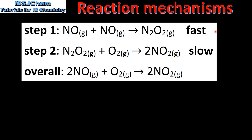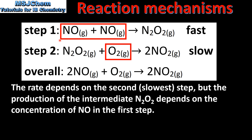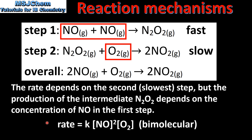Let's look at one more example. In the previous examples step 1 was the slowest step — the rate determining step. However, in this reaction mechanism step 2 is the slowest step. So the rate depends on the second step, but the production of the intermediate N2O2 depends on the concentration of NO in the first step. So when we write the rate expression we have to include the NO from the first step and the oxygen from the second step. Here we have the rate expression. Because there are two reactant particles in the slowest step, the reaction is bimolecular.